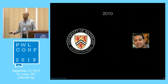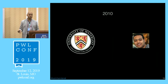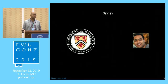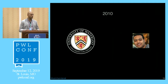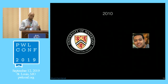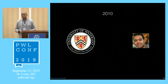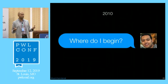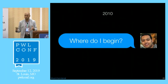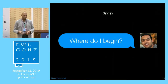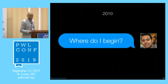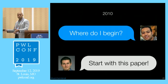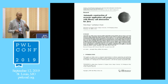I came from a master's degree in network security at Waterloo — quite a different domain. I only took one grad school course about programming languages, also with Andre, and then started my PhD. My first question was: where do I begin? Andre's answer was: why don't you start reading this paper? And that paper's title was 'Automatic Construction of Accurate Application Call Graph with Library Call Abstraction for Java' by Wei Li Zhang and Barbara Ryder.